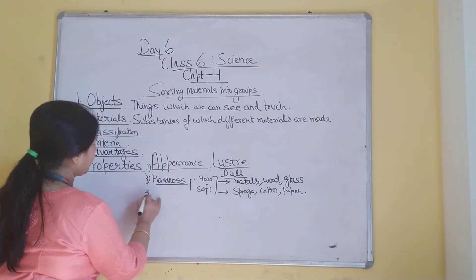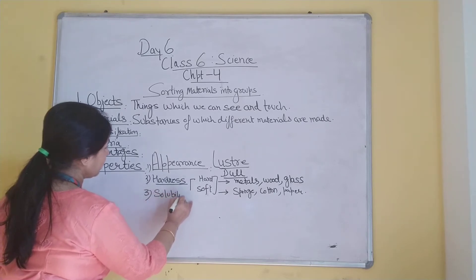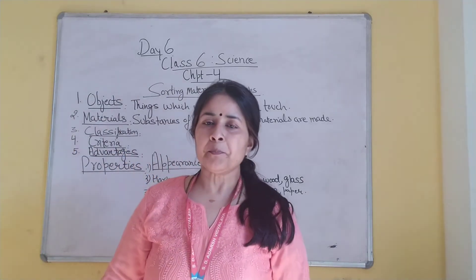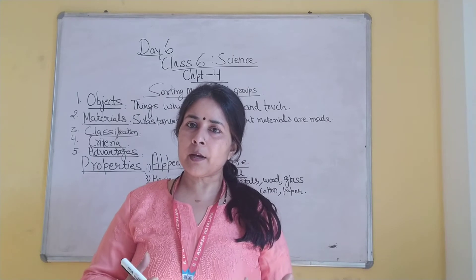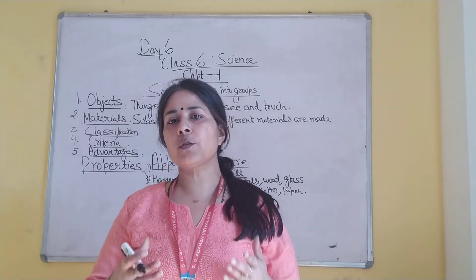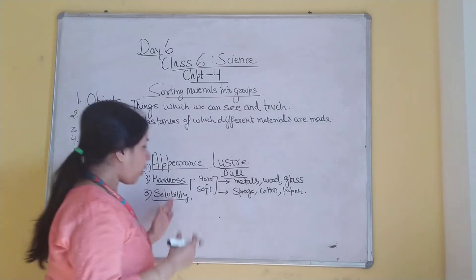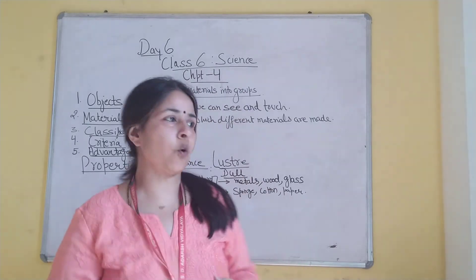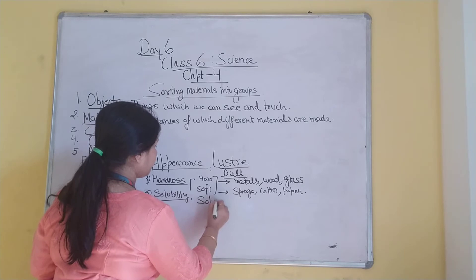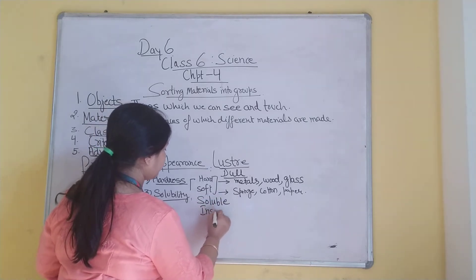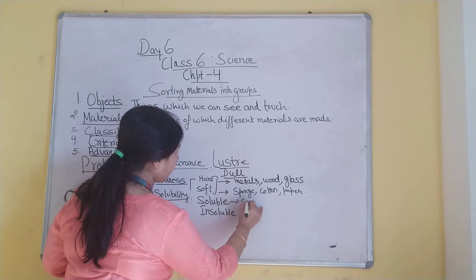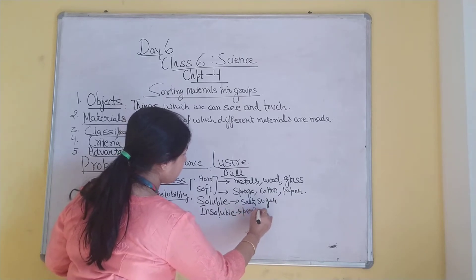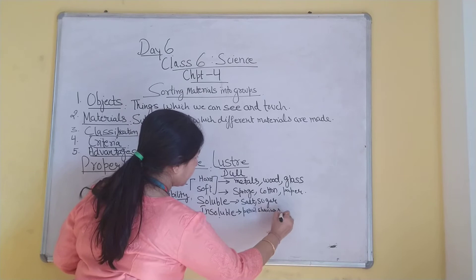The third property we talked about was solubility. If solid things dissolve or disappear in water, those are soluble things. Solid things which do not dissolve in water are known as insoluble things. Examples of soluble substances are salt and sugar. Insoluble examples include pencil shavings and rice grains.